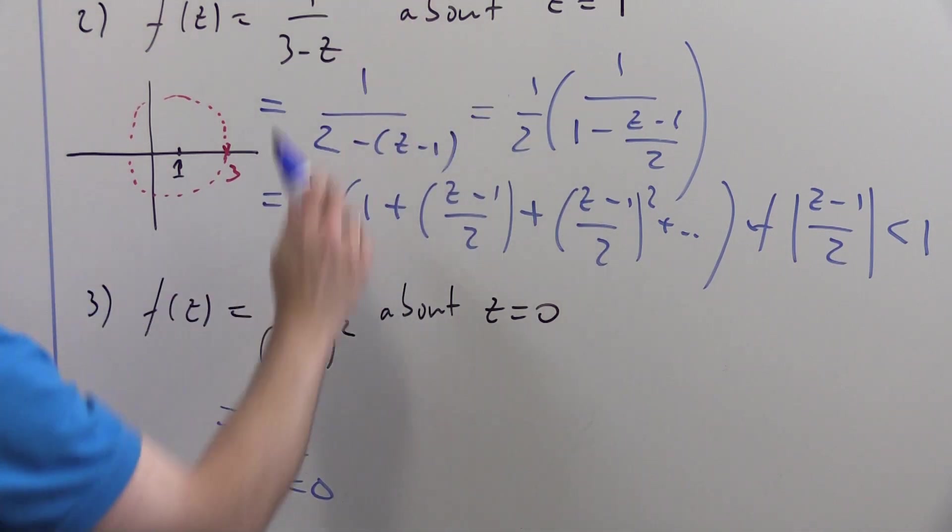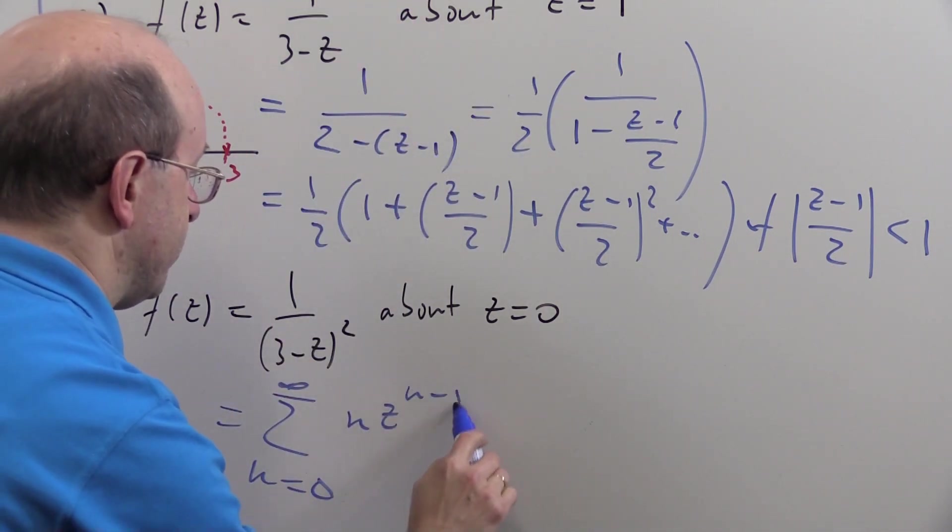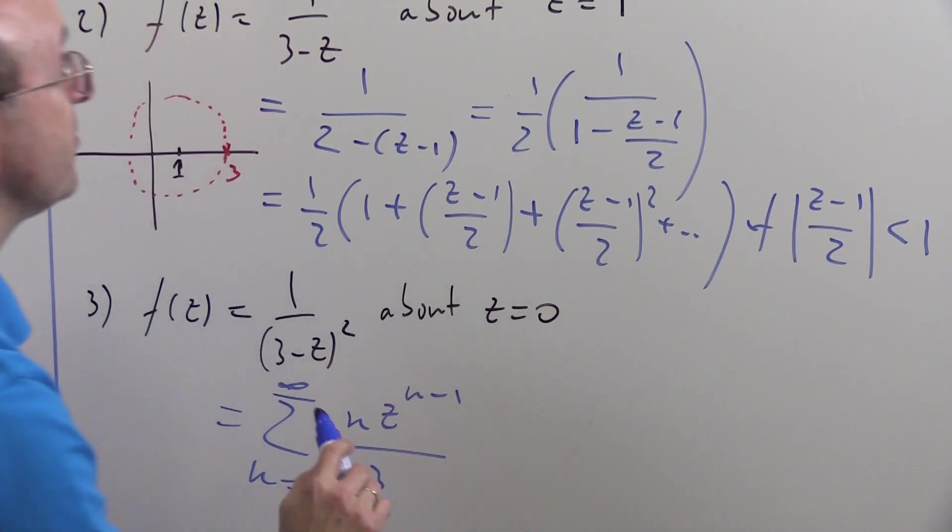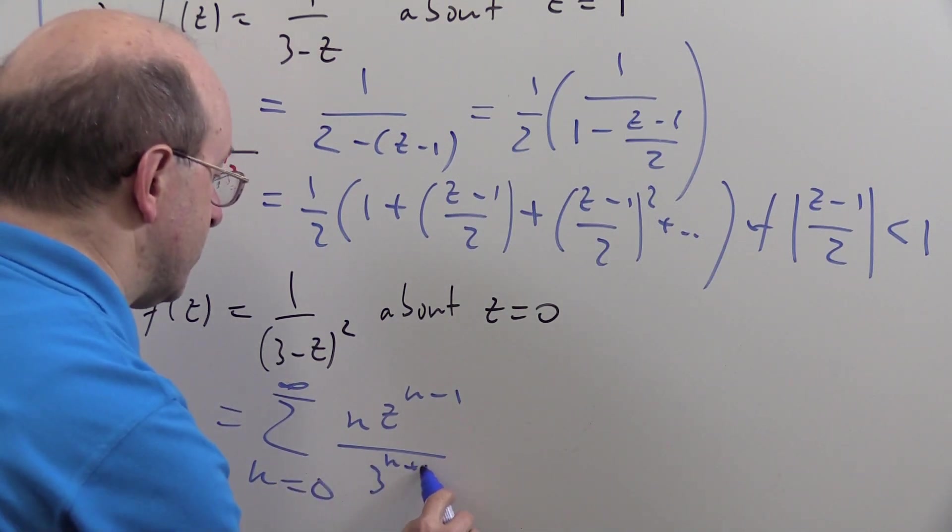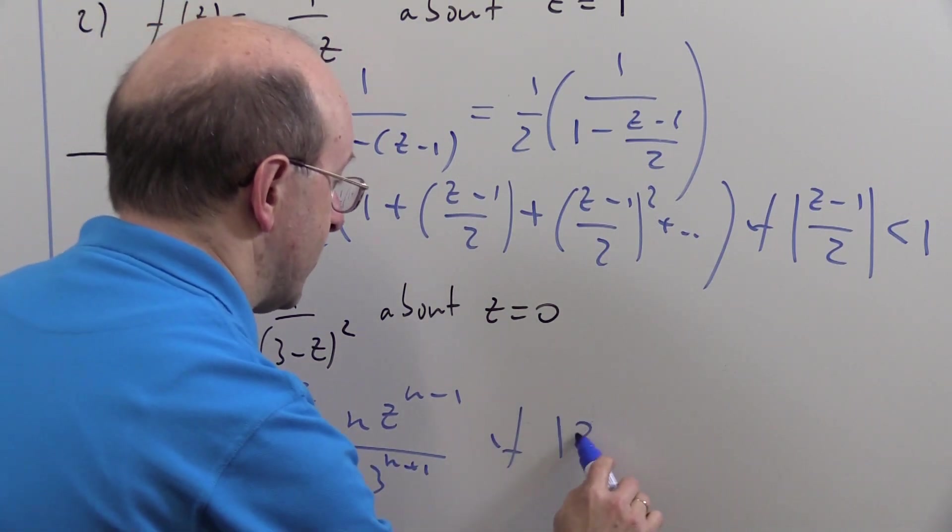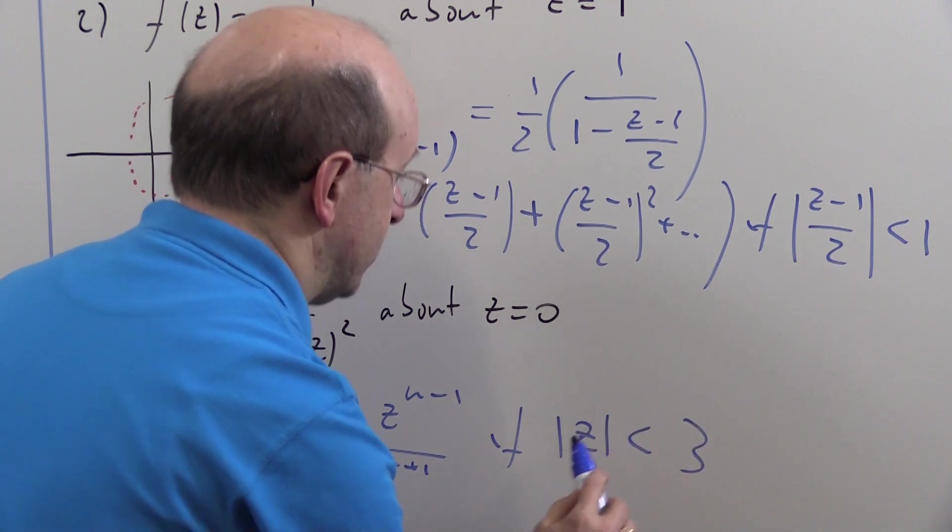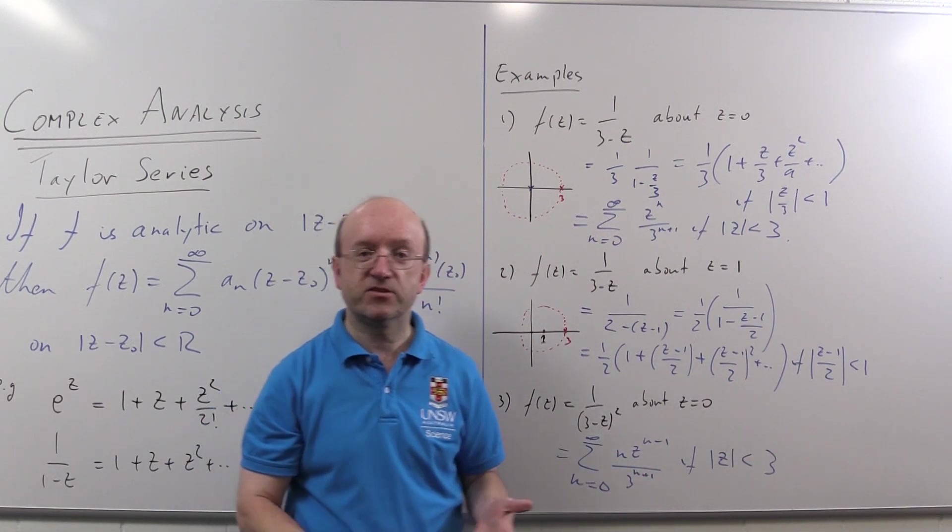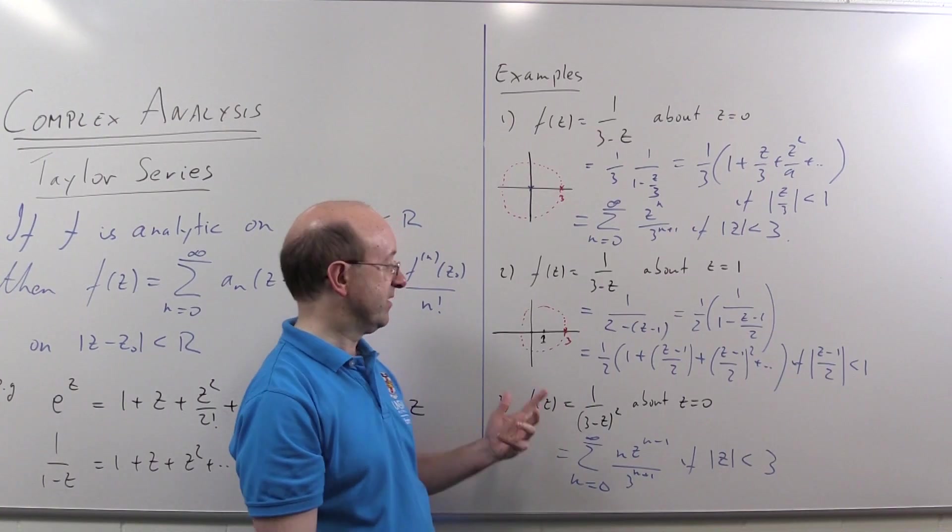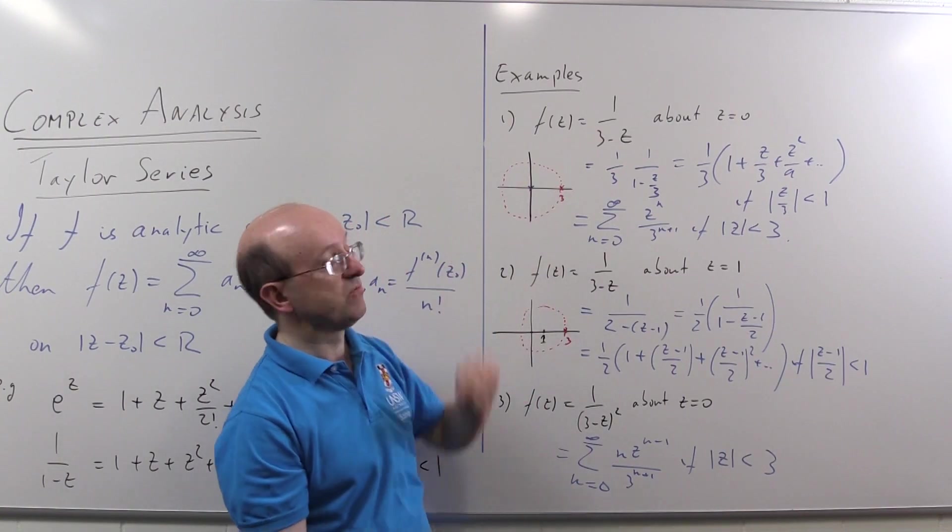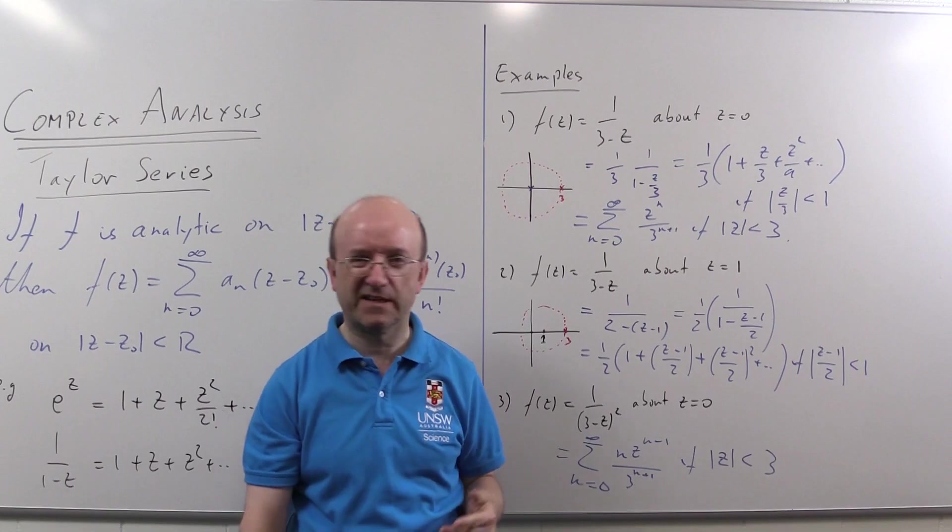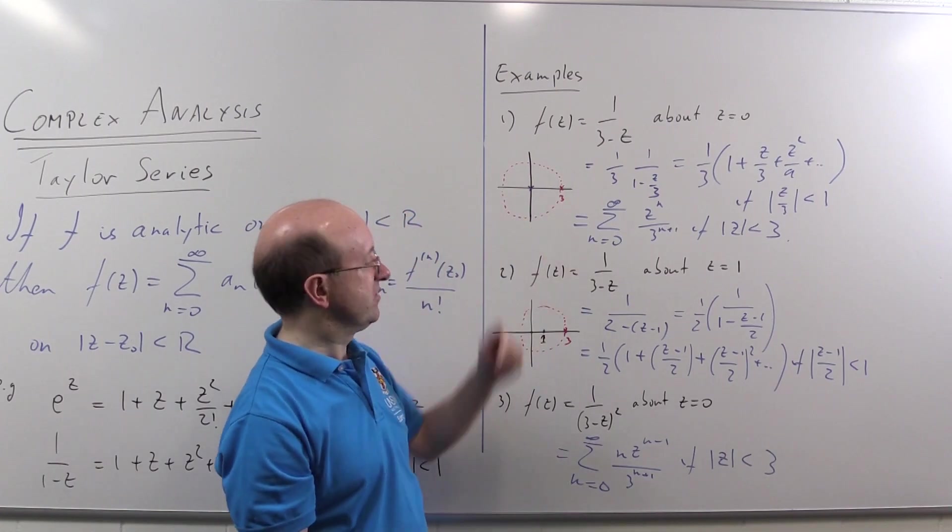This will be equal to the sum from n equals zero to infinity: n z to the n minus one over three to the n plus one, if mod z less than three. In the same disk, of course, because this function is analytic exactly where the original one was here. I've called it f. I should have called it f dashed or something like that. So it would be the same picture.